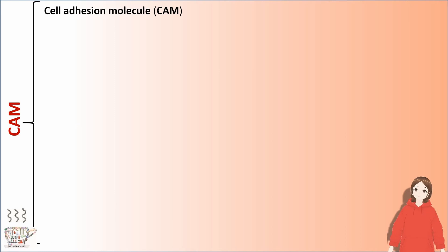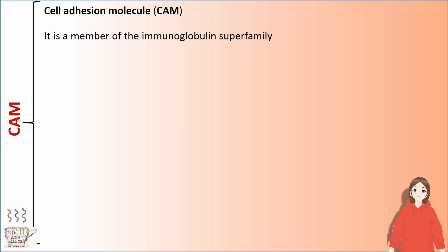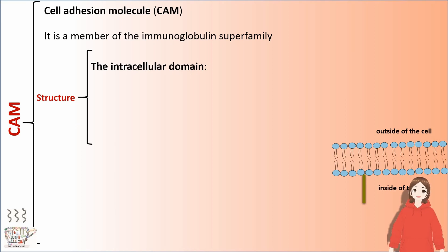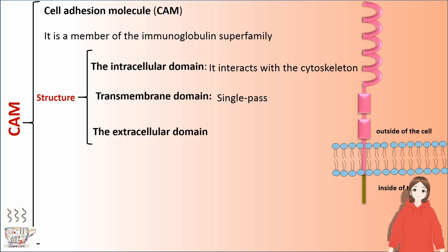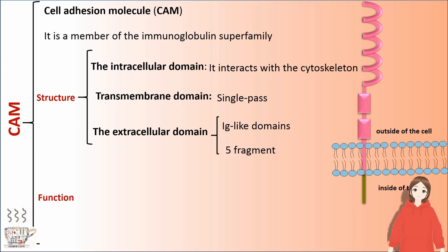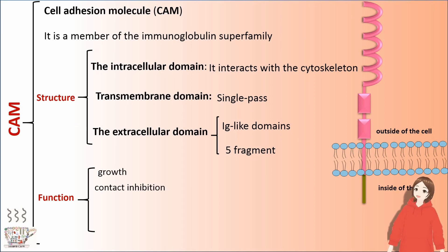Cell adhesion molecule, or CAM, is a member of the immunoglobulin superfamily. CAM has three domains in its structure: the intracellular domain that interacts with the cytoskeleton, the single-pass transmembrane domain, and the extracellular domain, which has five Ig-like domains. CAM plays a role in growth, contact inhibition, apoptosis, and movement.